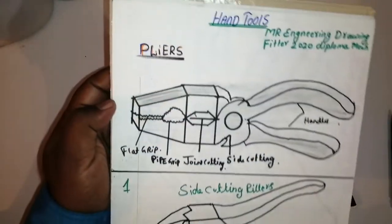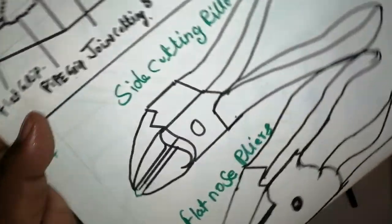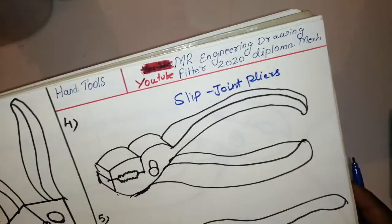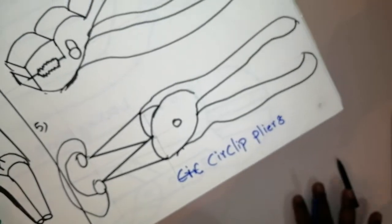This is the first type of plier. After that, side cut plier and flat nose plier, then round nose plier, then slip joint plier.